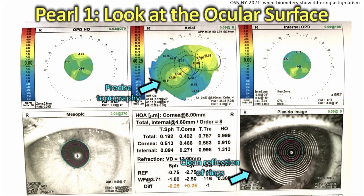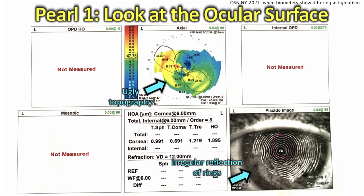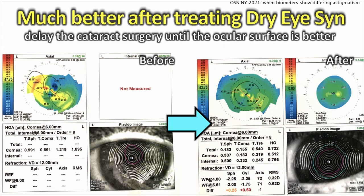Now look at that bottom right corner — you can see the very clean reflection of those rings from the corneal surface. This is a nice clean corneal surface. But now look at this other eye — look how irregular it is. You can't make anything of the topography. Look at the bottom right corner: what an irregular reflection of those rings. This patient has severe ocular surface issues that must be addressed before you do the cataract surgery. Don't even plan it yet.